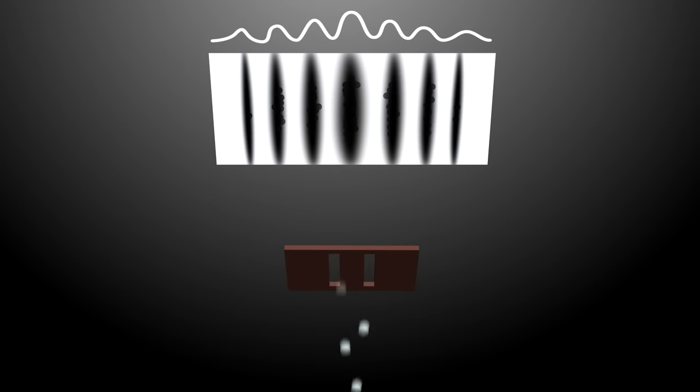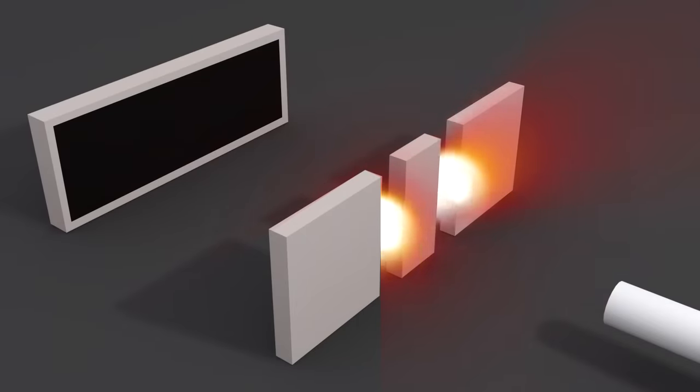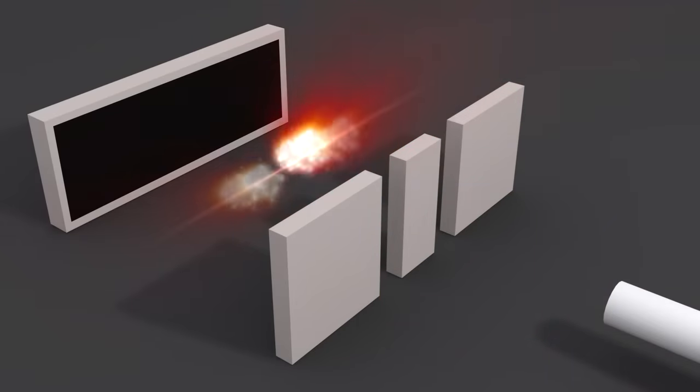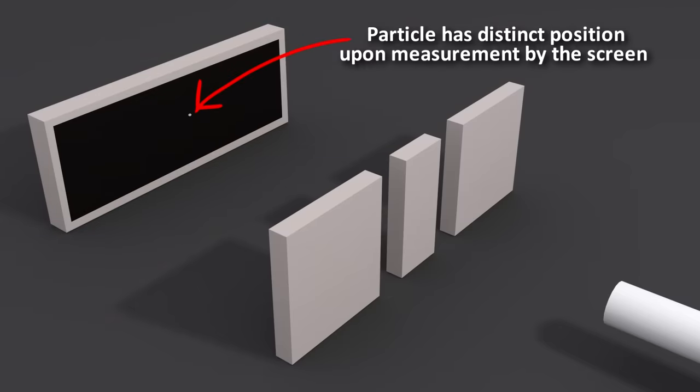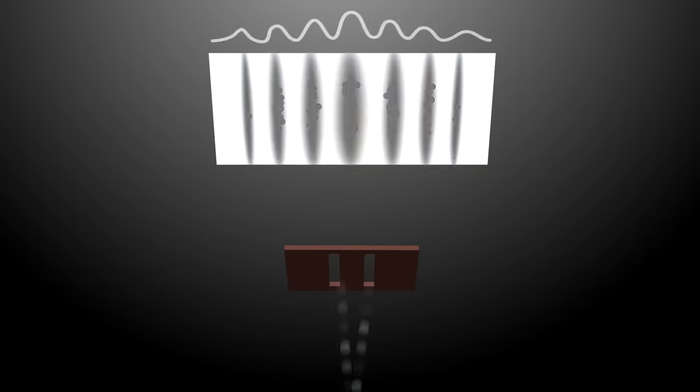In the famous double slit experiment, for example, where particles like electrons are fired at two slits in a screen, we see an interference pattern on the far side caused even by electrons fired one at a time. It's as if each of them goes through both slits at once and interferes with itself. These superpositions and the interference they cause can only persist as long as we don't try to find out where the particle actually is, or what state it's actually in.